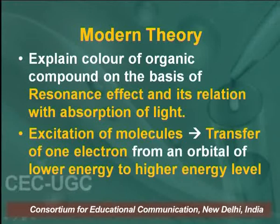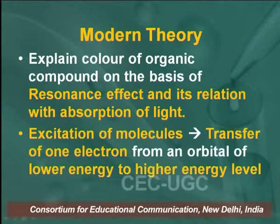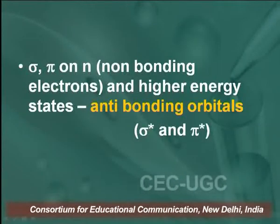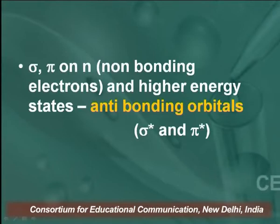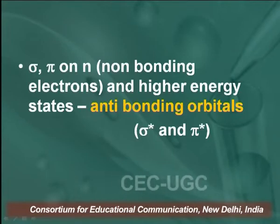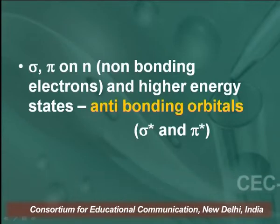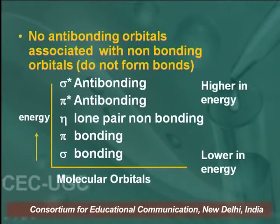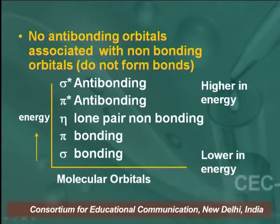What happens during the excitation of molecules? The electrons are excited — transfer of one electron from an orbital of lower energy to an orbital of higher energy level takes place. That is, sigma, pi, or non-bonding electrons in lower energy states are transferred to higher energy anti-bonding orbitals by absorption of radiation. Very importantly, non-bonding orbitals have no associated anti-bonding orbitals because they do not form bonds.